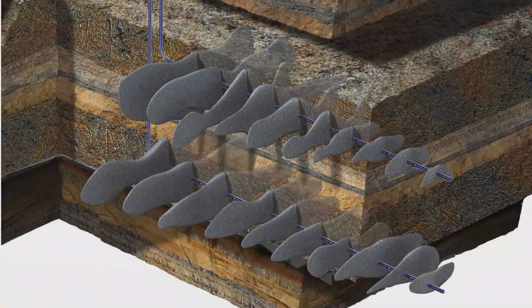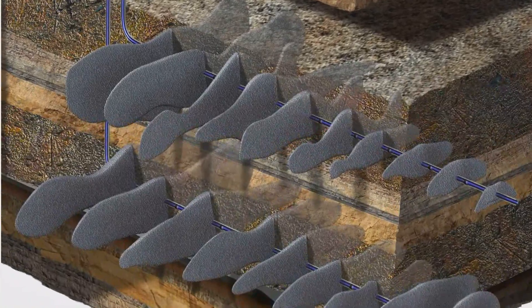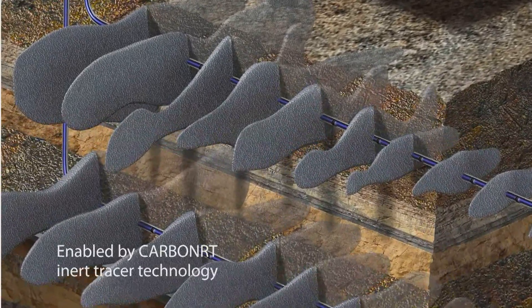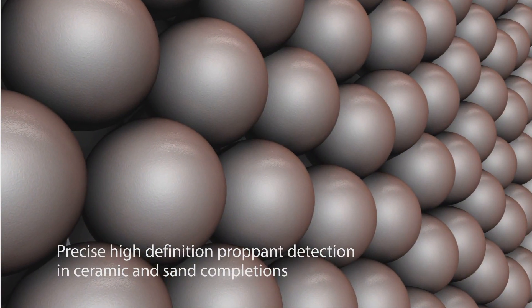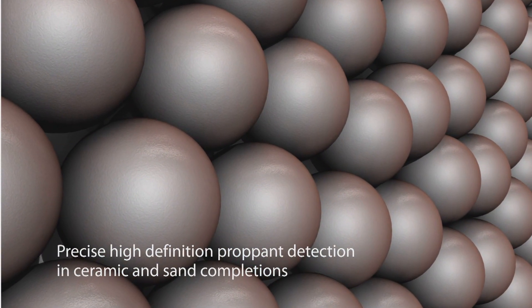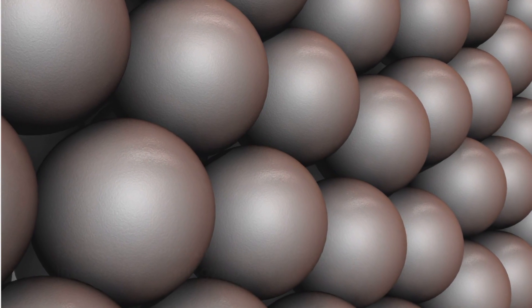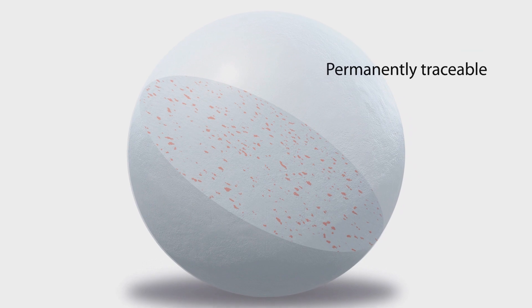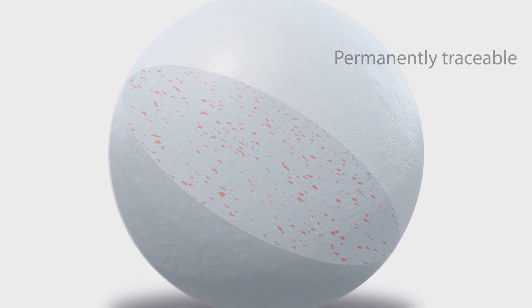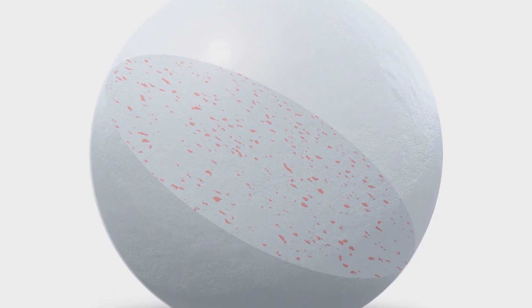The FractureVision service is made possible by our unique CARBO NRT inert tracer technology, which enables precise high-definition detection of propant location at any time using a neutron logging tool run. The inert tracer is manufactured into every propant grain and forms an integral part of the matrix of the propant material, so it cannot be dissolved or washed away.